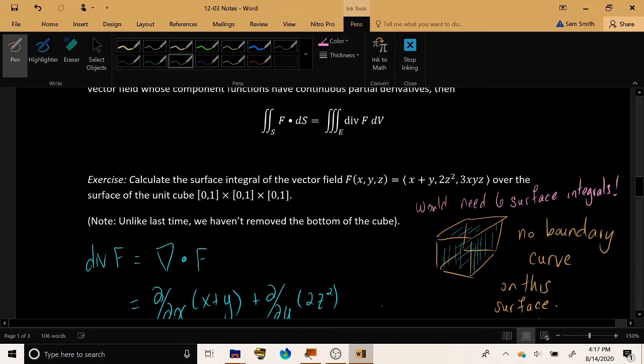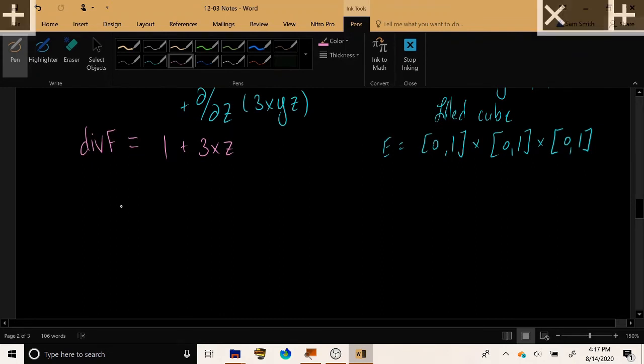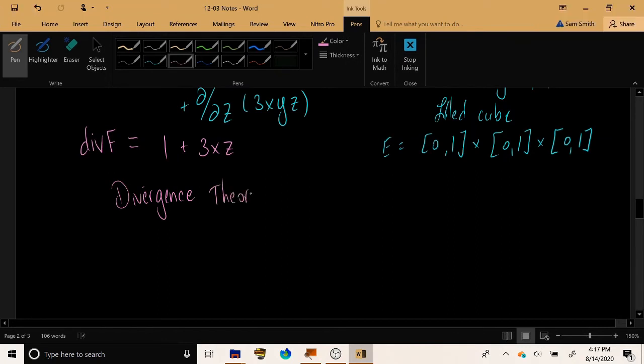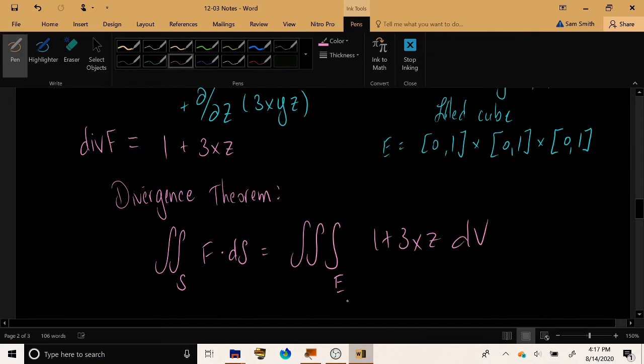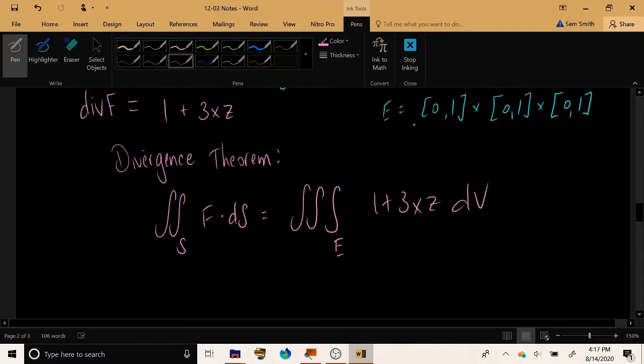Instead of calculating 6 surface integrals for every face of the unit cube, I'm going to use Divergence Theorem to turn the surface integral of F into the triple integral of 1 plus 3xz over the filled cube. Now because this is a cube, the limits are very easy to translate from the interval endpoints that we are given for the cube.